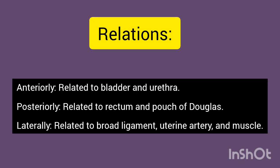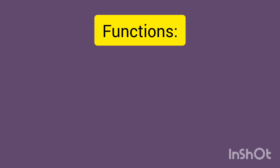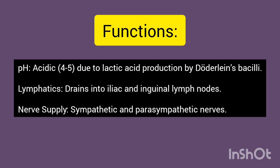Relations: Anteriorly related to the bladder and urethra; posteriorly related to the rectum and pouch of Douglas; laterally related to the broad ligament, uterine artery, and levator ani muscle. pH is acidic (4–5) due to lactic acid production by Döderlein's bacilli. Lymphatics drain into iliac and inguinal lymph nodes. Nerve supply is via sympathetic and parasympathetic nerves.